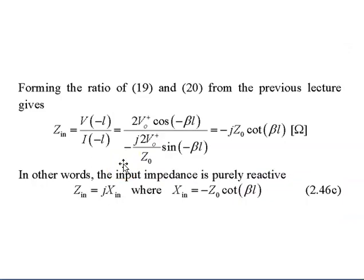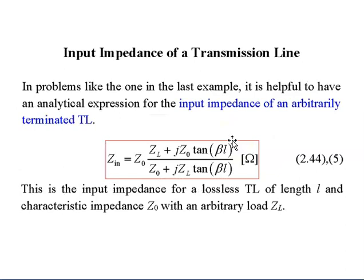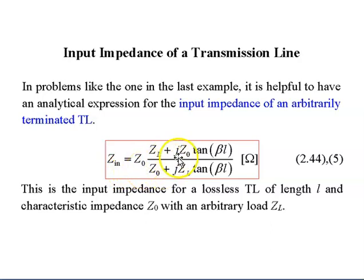Forming the ratio from the previous two equations, the input impedance is purely reactive — you can tell because of the minus J. The expression for the input impedance of an arbitrarily terminated transmission line is: Zin = Z0 × (ZL + jZ0·tan(βL)) / (Z0 + jZL·tan(βL)), in ohms. This is the input impedance for a lossless transmission line of length L.